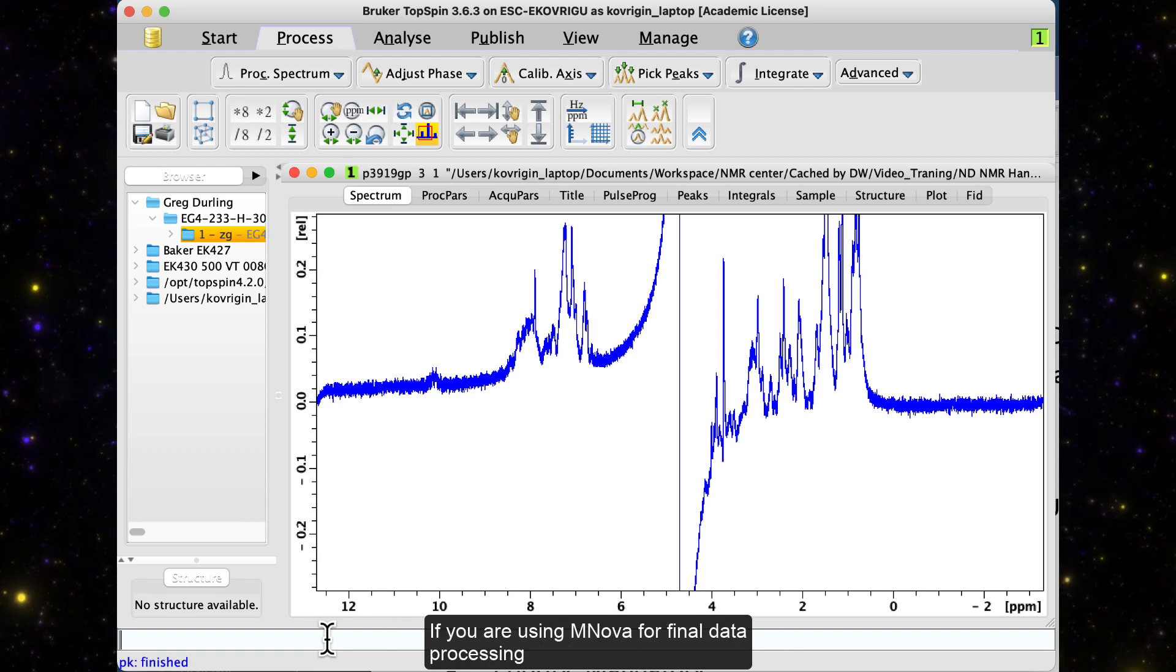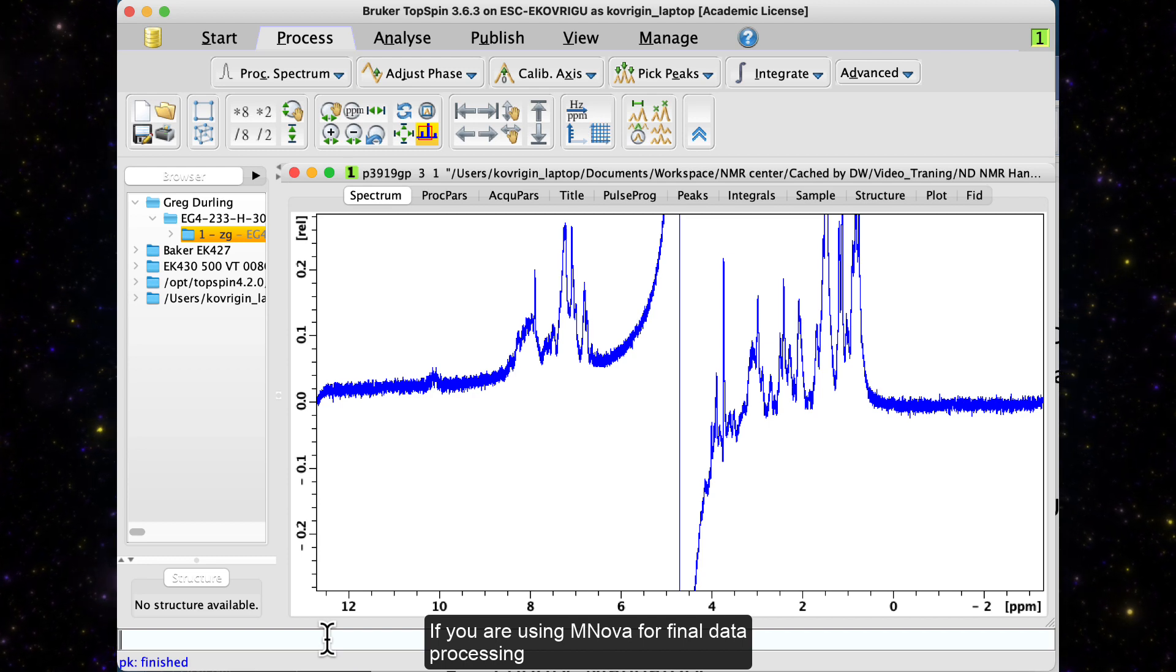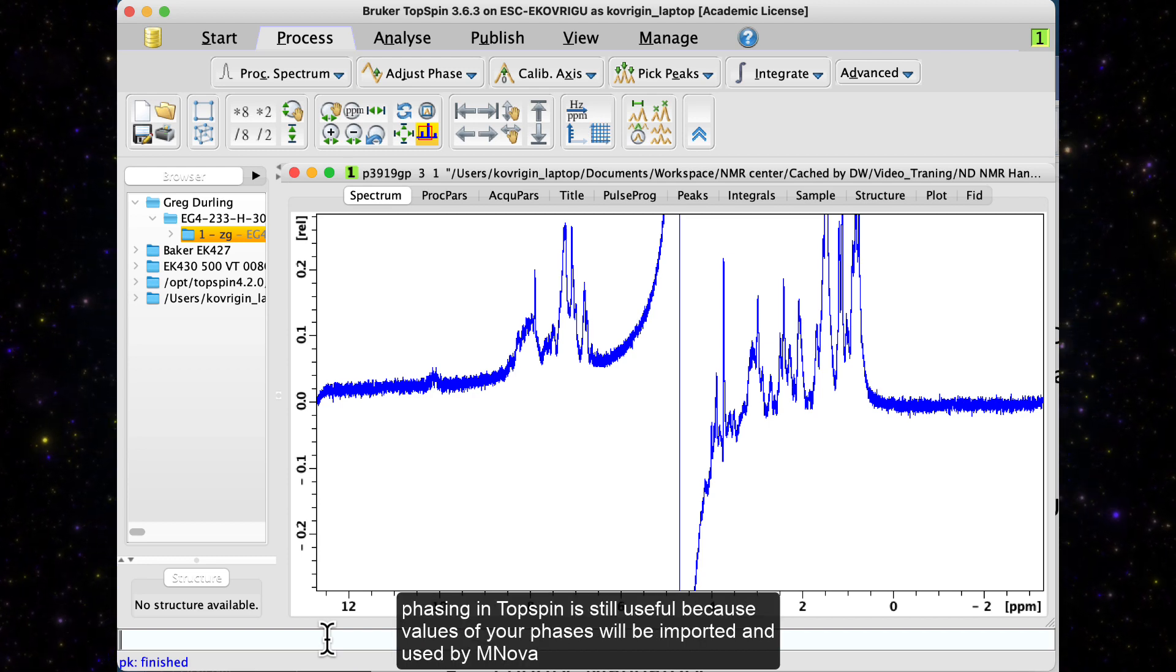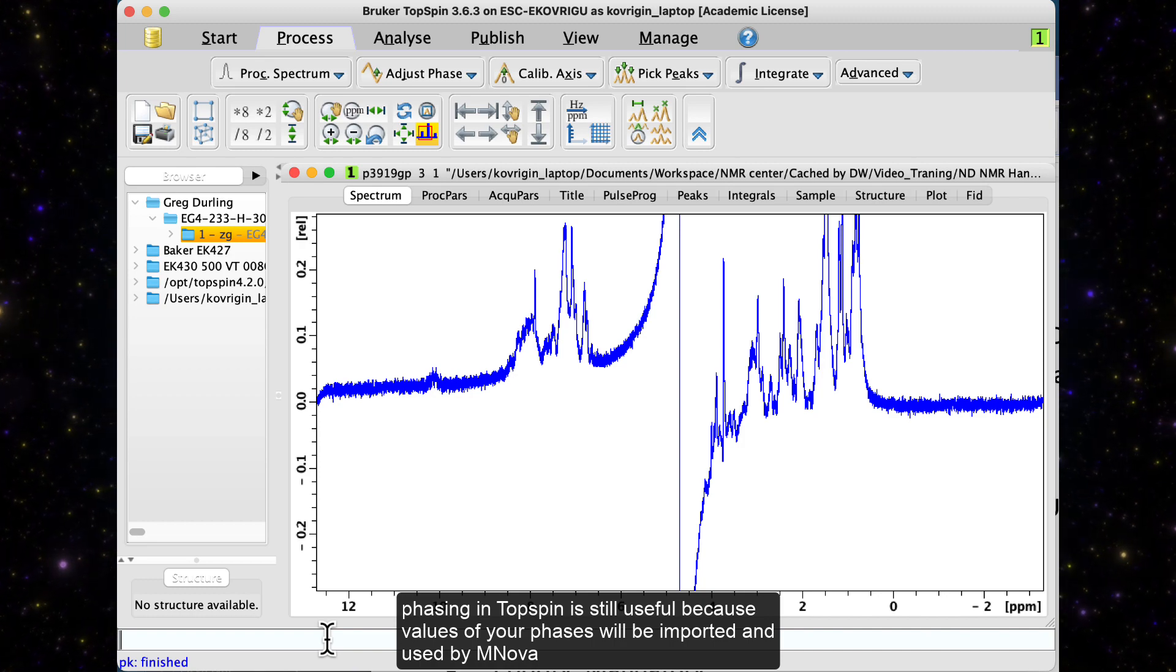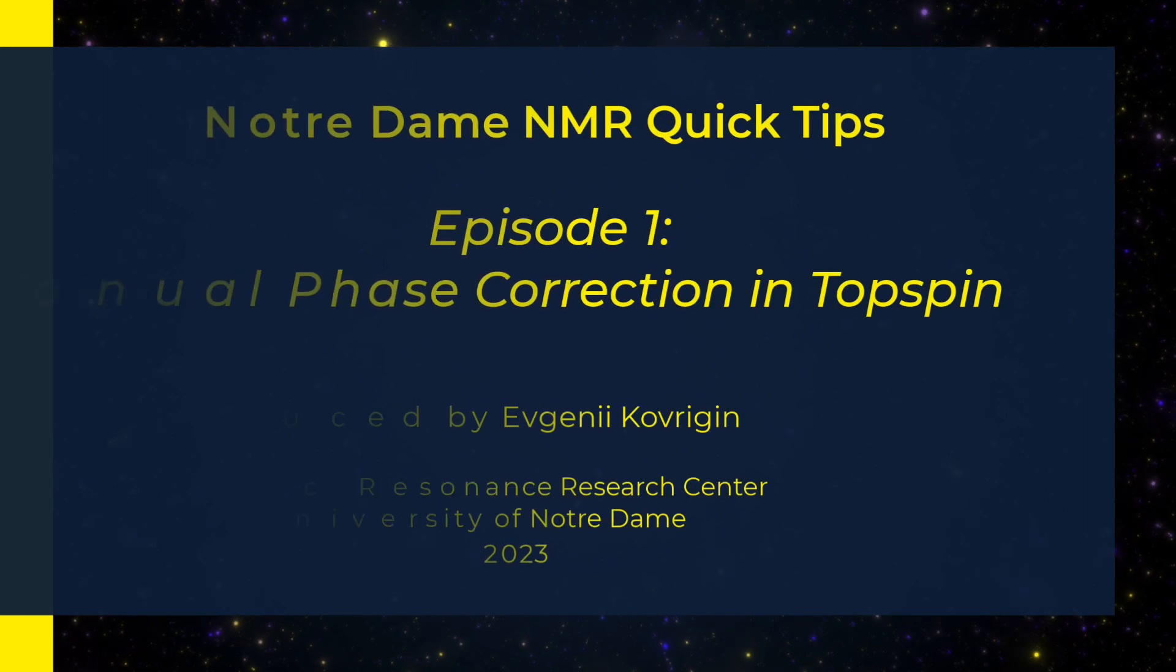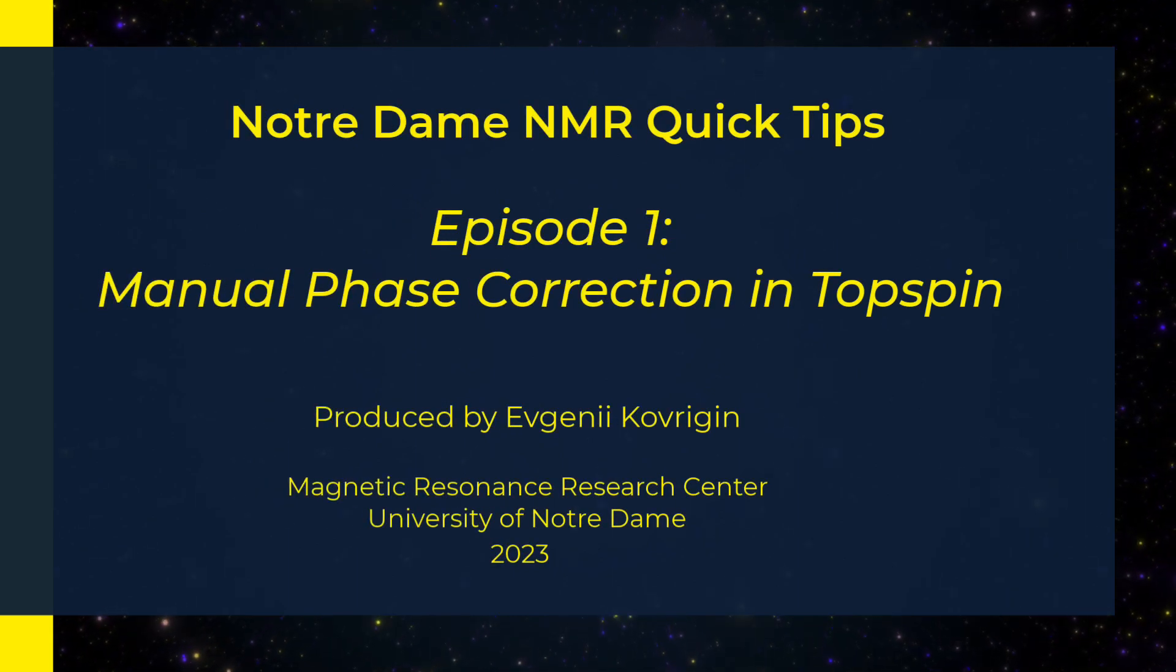If you are using IMNOVA for final data processing, phasing in Topspin is still useful, because values of your phases will be imported and used by IMNOVA.